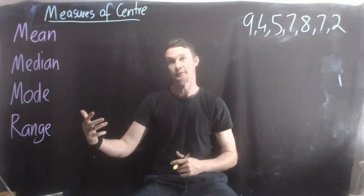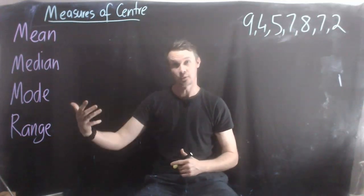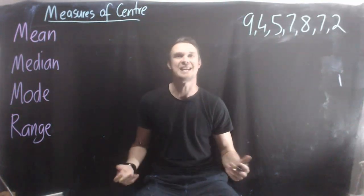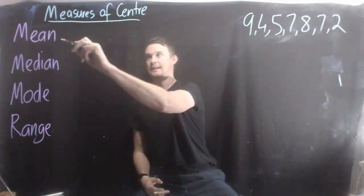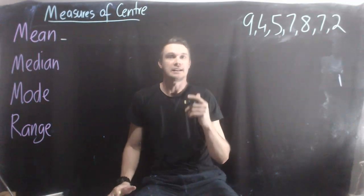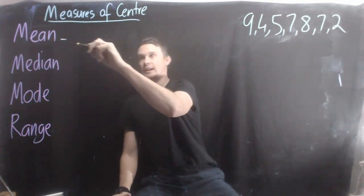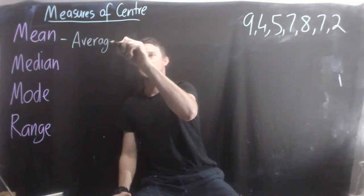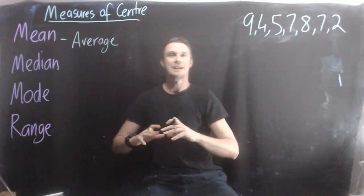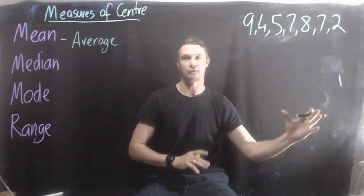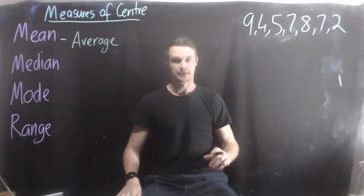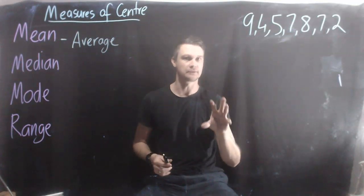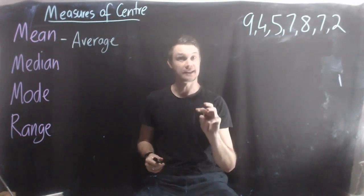The four lessons we're going to be focusing on are these four, and we're going to start by looking at what mean is. What mean means is average. So when we talk about the word mean, what we mean is average — the average of some numbers. Let's do an example of what that looks like, and there are a couple of steps you need to follow to calculate the average.